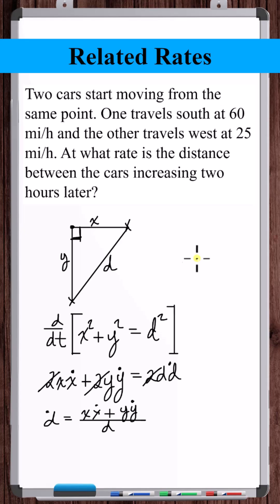But do we put them as positive or negative? This is a triangle. The side lengths of a triangle can't be negative. This side length and this side length are both increasing, so x dot and y dot are positive.